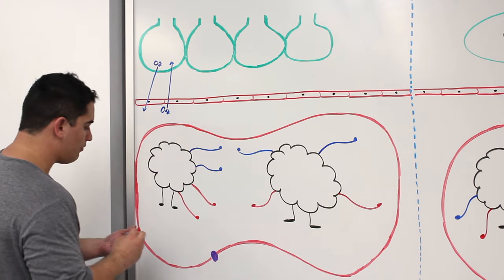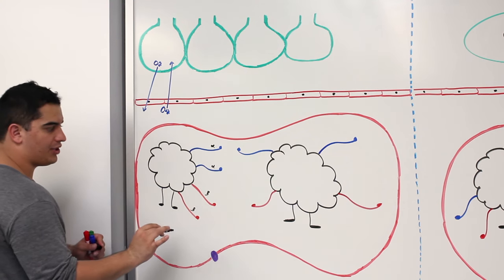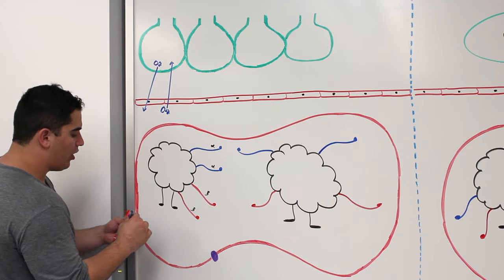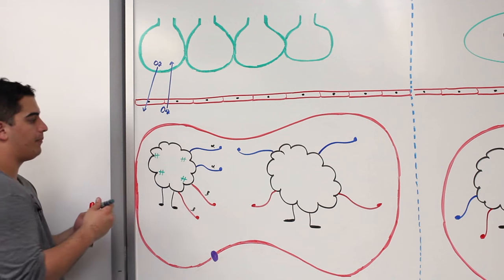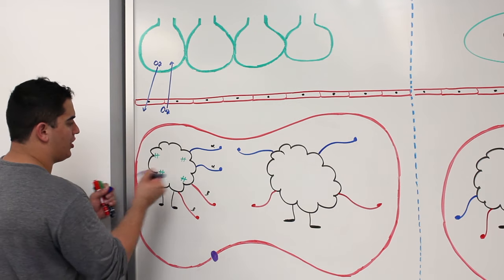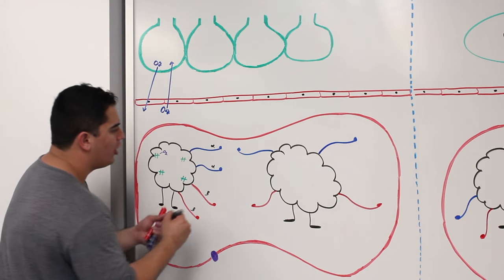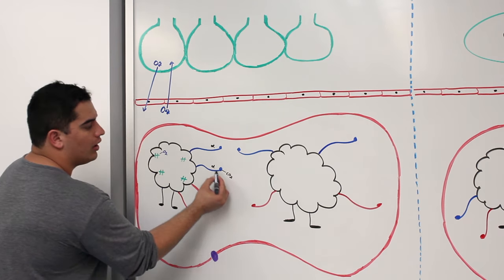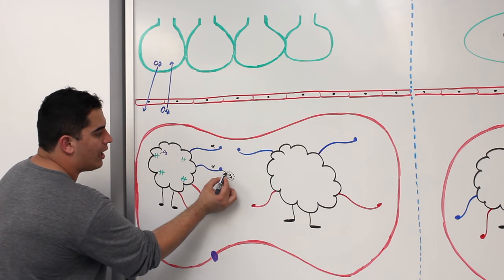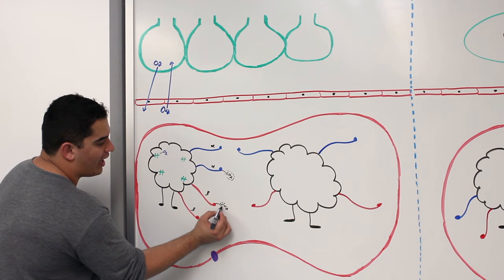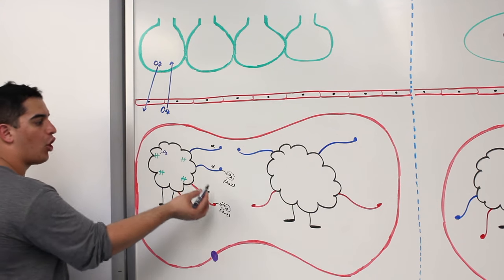Hemoglobin has two alpha chains and two beta chains — that's hemoglobin A1. It also has four iron-containing heme groups in the 2+ ferrous state. At this point maybe it was only bound to one oxygen, but bound to a lot of CO2 and protons. CO2 bound onto the amino acids of the globin chains accounts for 20% of CO2 transported in the blood, in the form of carbaminohemoglobin.